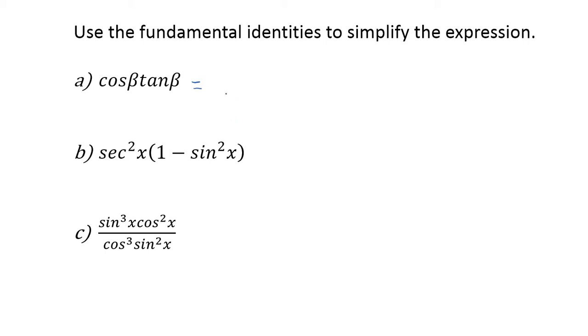Cosine can't do anything with that, but tangent - let's rewrite it. Tangent I can rewrite as sine over cosine, right? That's a quotient property. See what I did there - I substituted, and cosine over cosine will divide out, so this simplifies to just sine of beta. Cosine beta tangent beta simplifies down to just sine.